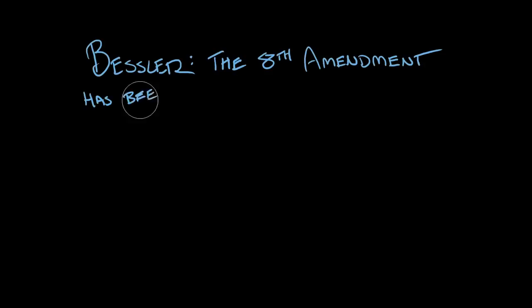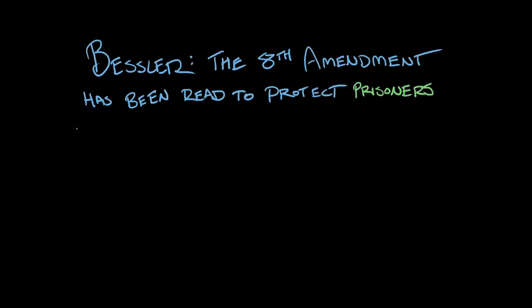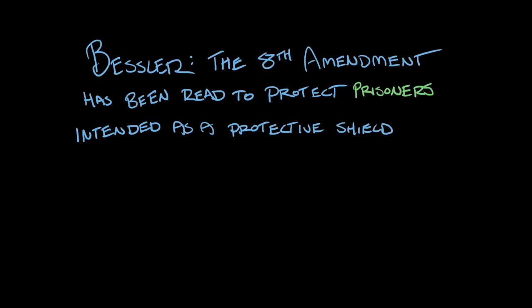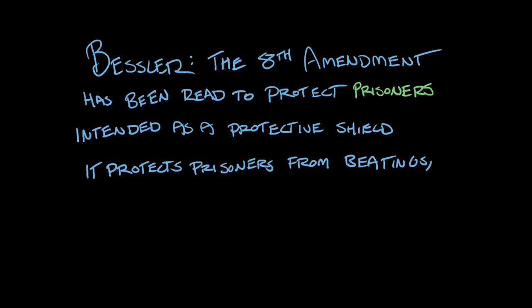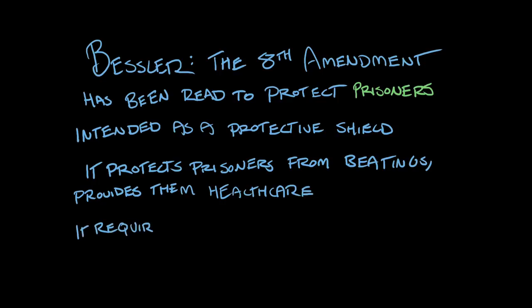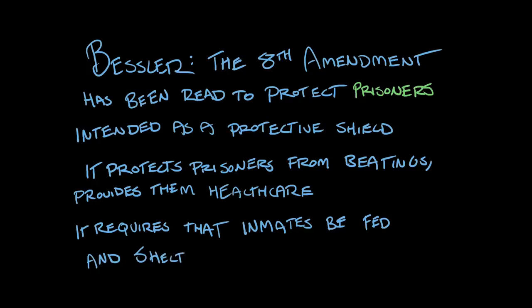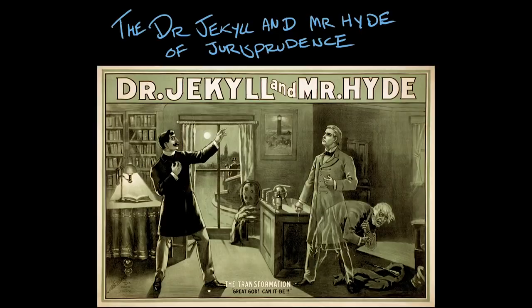At the same time, the Eighth Amendment has been read to protect prisoners. In general, the Eighth Amendment is a protective shield that prohibits prison guards from gratuitously beating up inmates. It requires prisons to provide some level of health care to prisoners because they cannot get it themselves — they are wards of the state once they're put in prison. It also requires that inmates be fed and sheltered. But then in the use of capital punishment, it becomes what might be called a kind of Dr. Jekyll and Mr. Hyde jurisprudence.